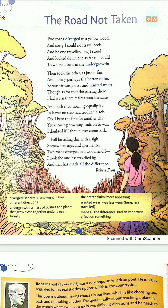Let's begin the poem. 'Two roads diverged in a yellow wood, and sorry I could not travel both and be one traveller, long I stood and looked down one as far as I could to where it bent in the undergrowth.'